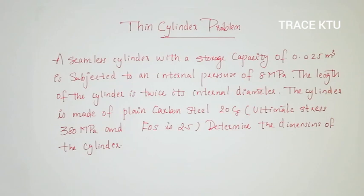Let's discuss the question. A seamless cylinder with a storage capacity of 0.025 m³ is subjected to an internal pressure of 8 MPa. The length of the cylinder is twice its internal diameter. The cylinder is made of plain carbon steel C8, with ultimate stress 380 MPa and factor of safety 2.5. Determine the dimensions of the cylinder.